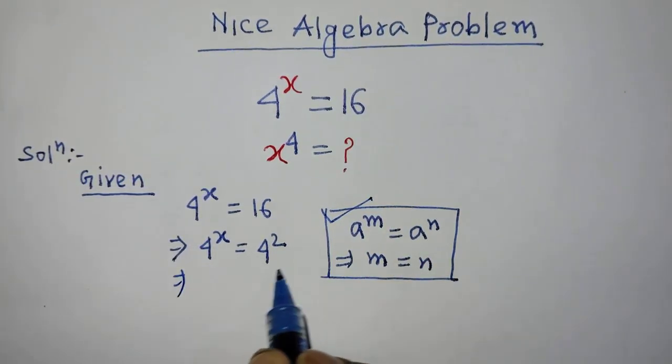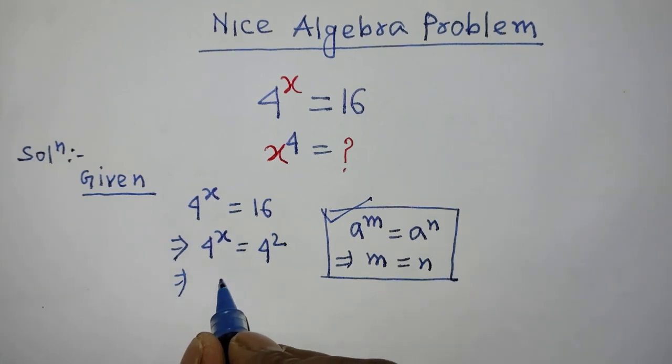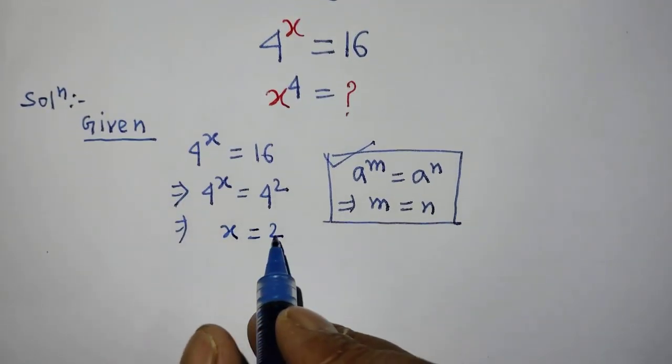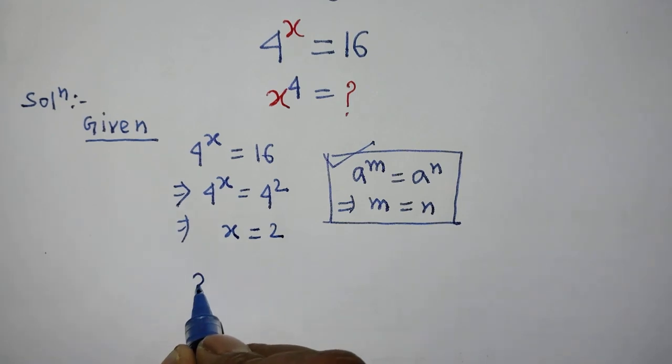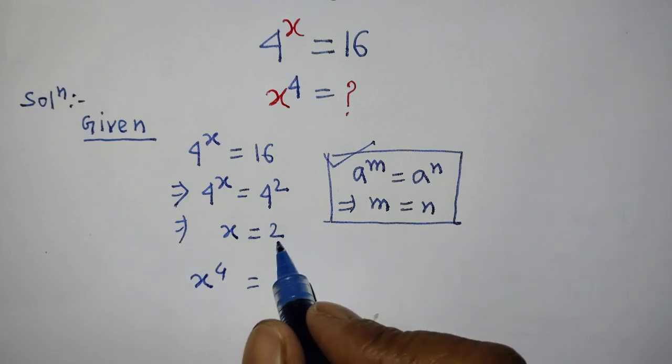Then it will be x is equal to 2. But we have to find the value of x to the power 4. Now we can put the value of x is equal to 2 in this exponential form.